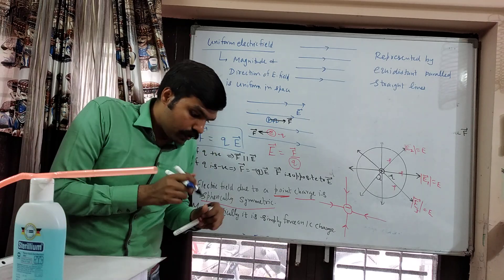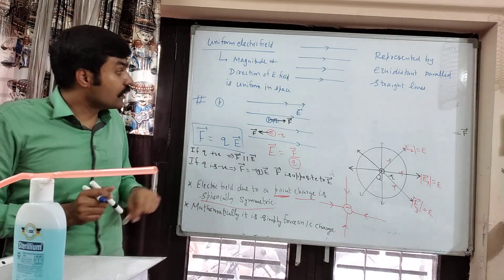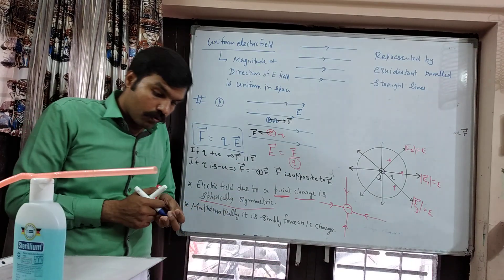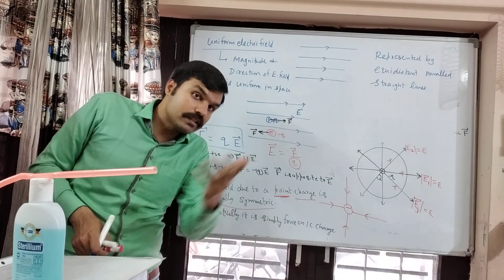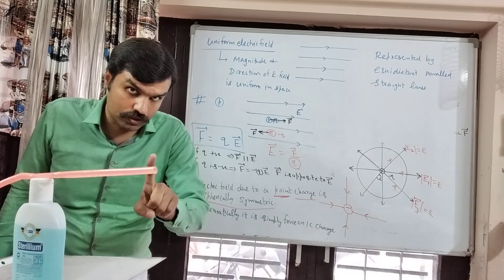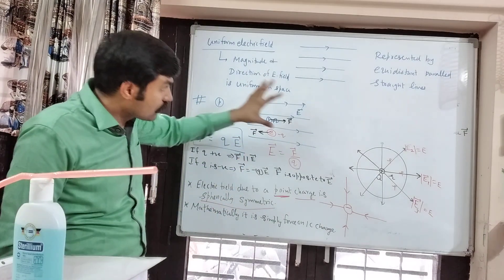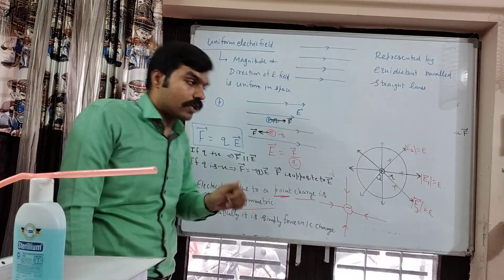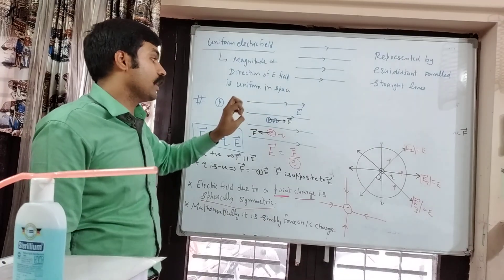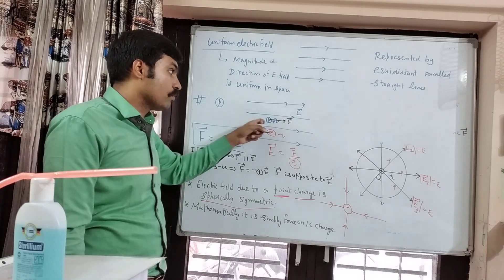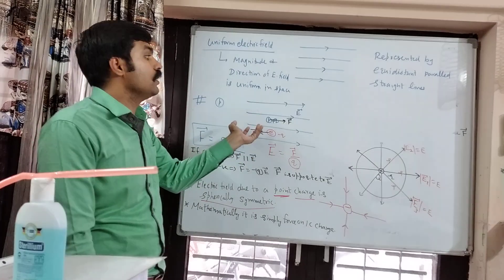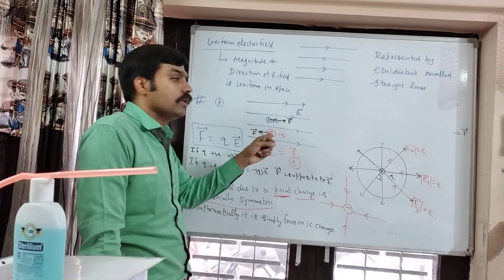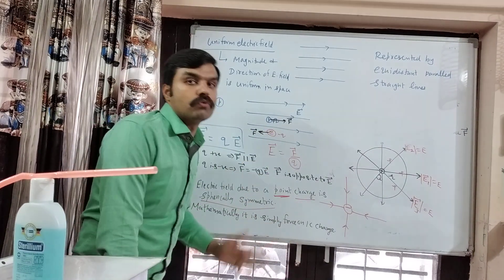Note this point carefully. In yesterday's definition, we were using a test charge, and the direction of force on the test charge was the direction of the electric field. If we are given the direction of the electric field, we can calculate the force on any charge — it can be positive or negative. On a positive charge, the force will be in the direction of the electric field. On a negative charge, the force will be in the direction opposite to the electric field.